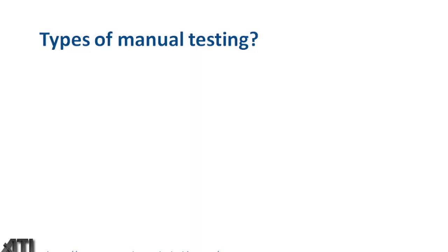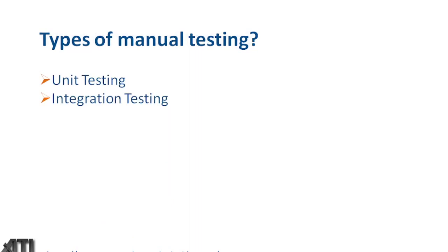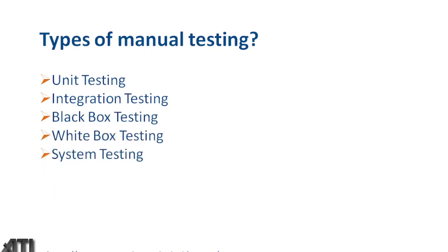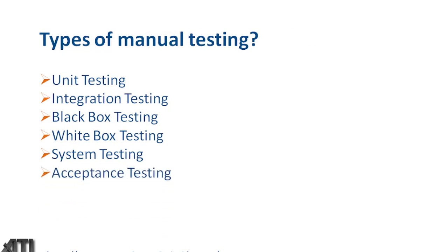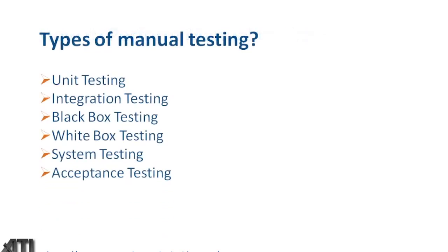What are the different types of manual testing we can perform? We have unit testing, integration testing, black box testing, system testing, and acceptance testing. These are the different testing types and they have many subtypes as well. We'll talk about all these testing types in detail in coming days. For now, just understand that these are the different kinds of testing which we can perform manually.